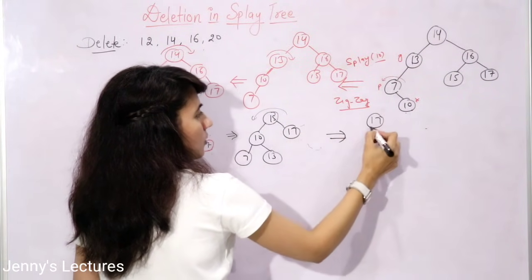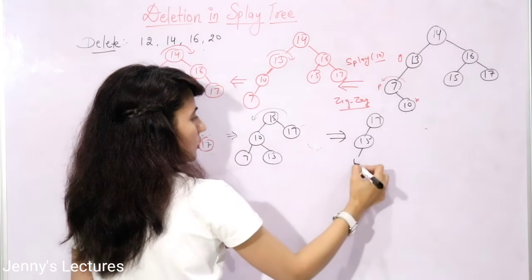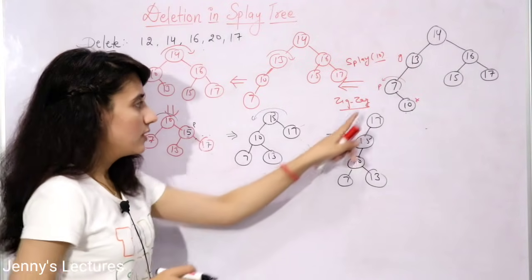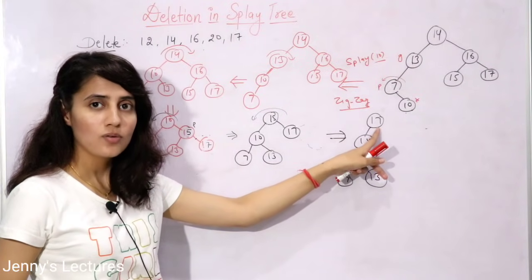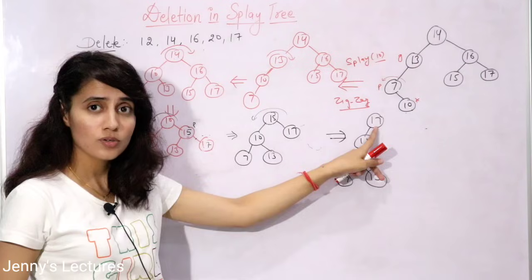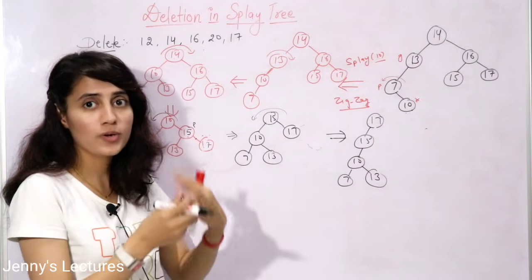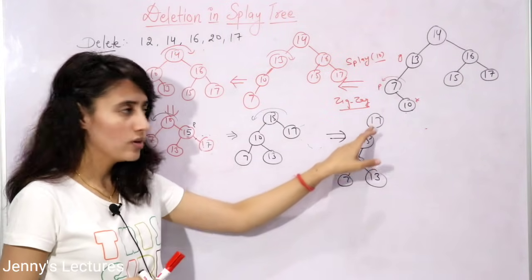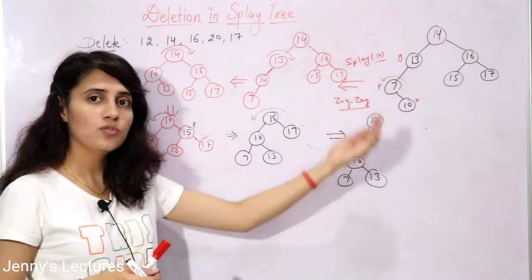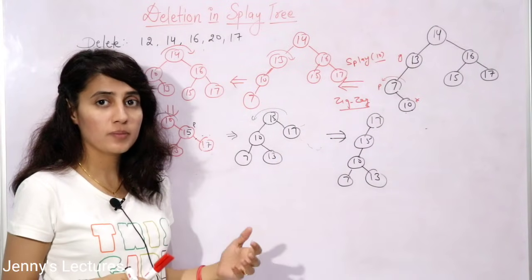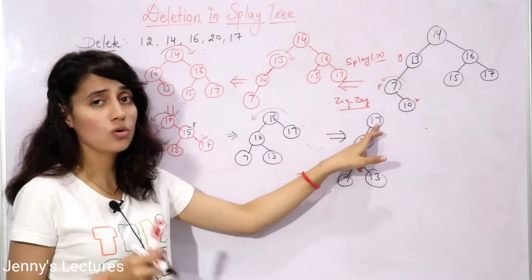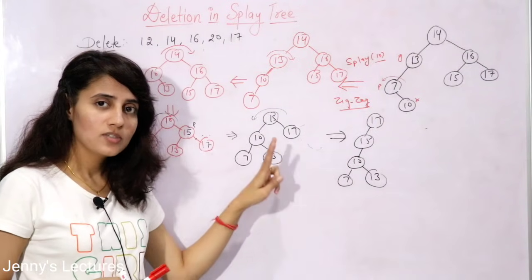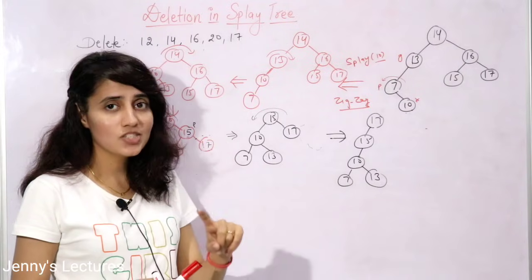After the left rotation, 17 becomes the root. Now suppose we delete 17, which is the current root. Since the root has no parent, we cannot do any splaying. We simply replace it: since 17 has a left child 15, node 15 becomes the new root. No splaying is needed because the deleted node had no parent.